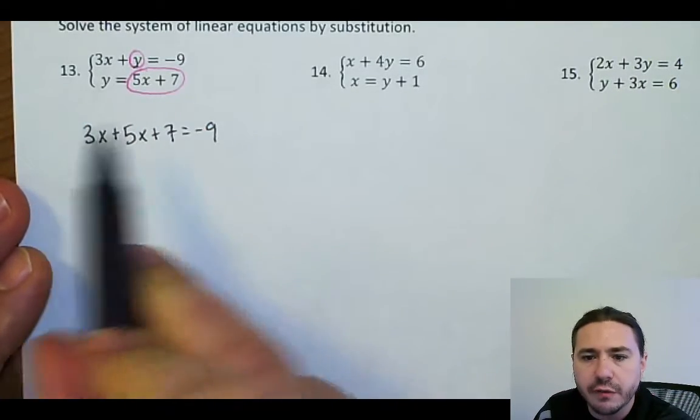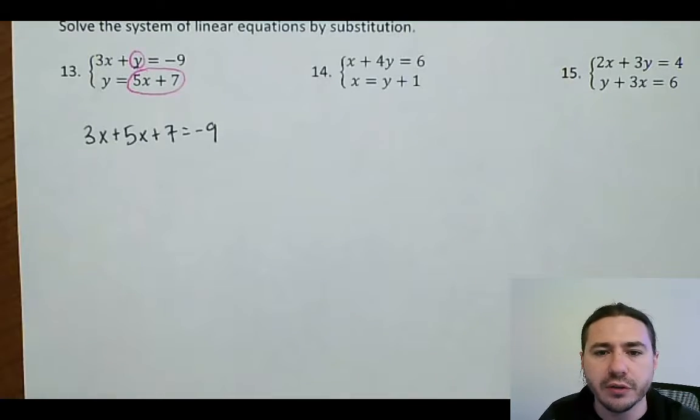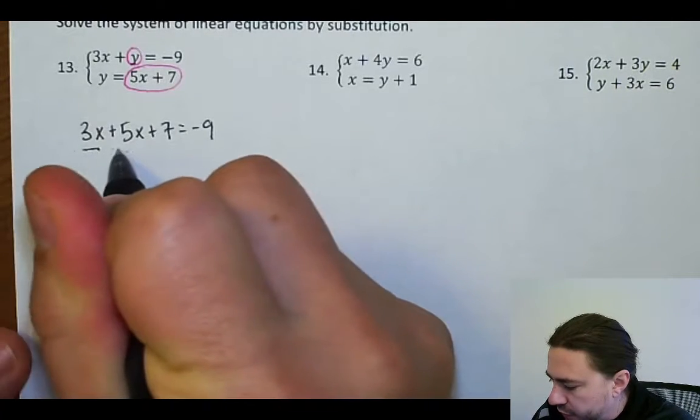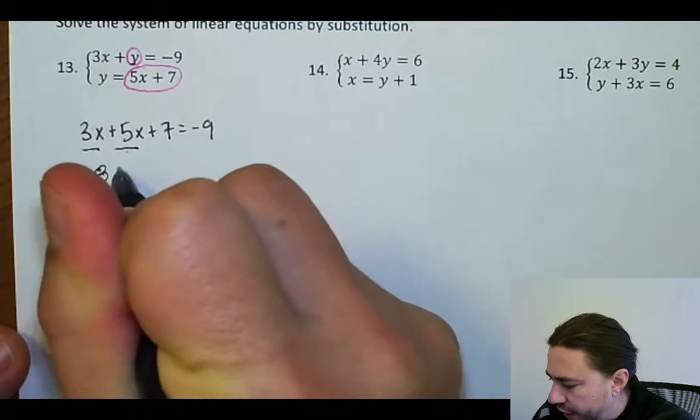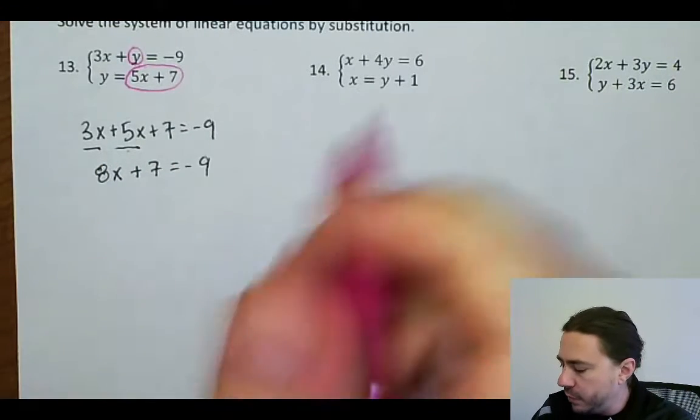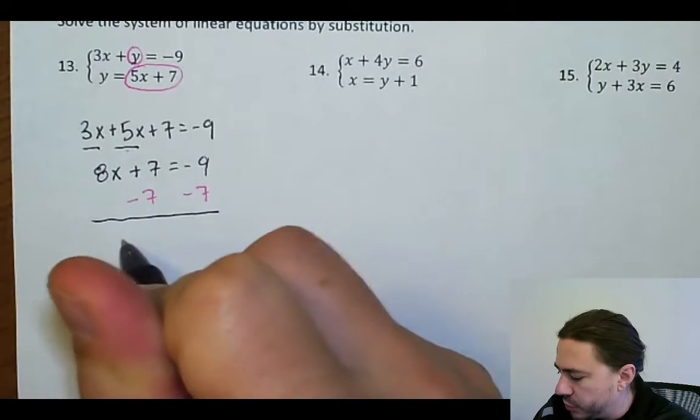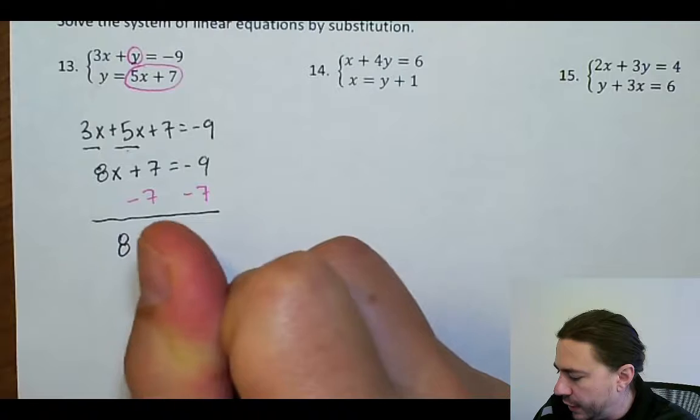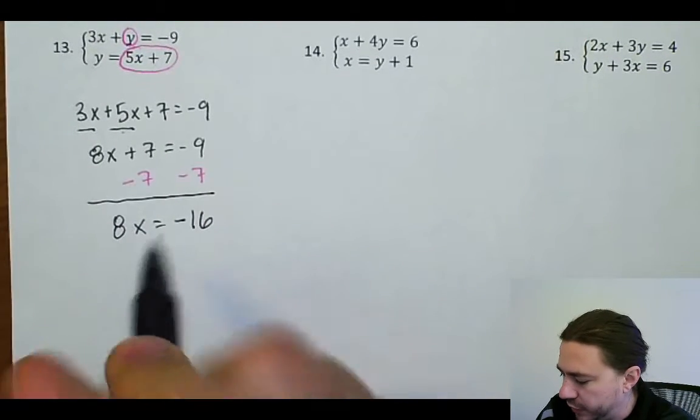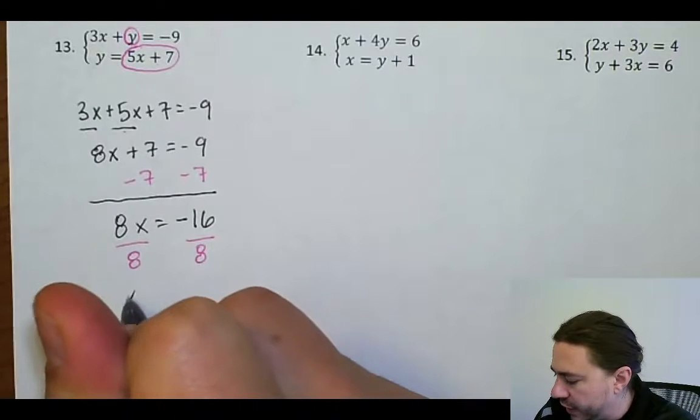From here, we're going to solve this equation like we would have done in unit 1 when we first learned how to solve equations. We need to combine like terms. 3x plus 5x is 8x. We need to subtract 7 on both sides. And I'm just kind of going through the motions here. We've solved lots of linear equations going all the way back to the beginning of the year. Divide by 8 on both sides. And so x is negative 2.